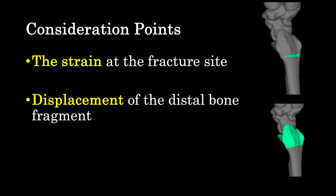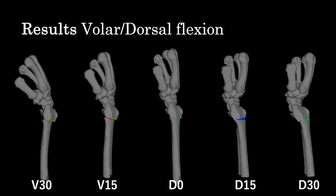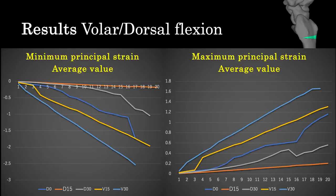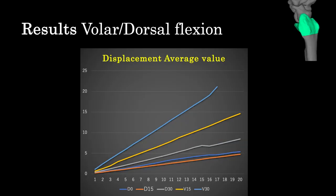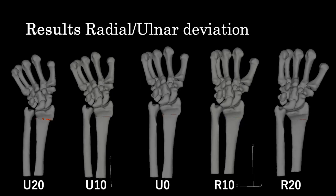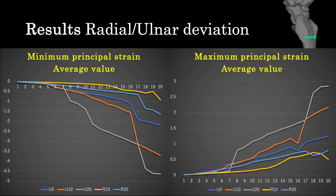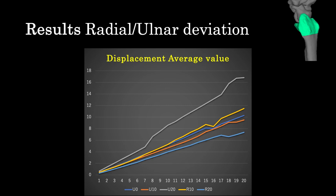The consideration points were the strain at the fracture site and displacement of the distal bone fragment. A video of the volar flexion and dorsal flexion models shows that the D15 model appeared to have the smallest strain. Both the minimum principal strain and the maximum principal strain were smallest in the D15 model, and the displacement was also smallest in the D15 model. In the radial and ulnar deviation models, the R10 model appeared to have the smallest strain. Both minimum and maximum principal strain were smallest in the R10 model, while displacement was smallest in the R20 model.